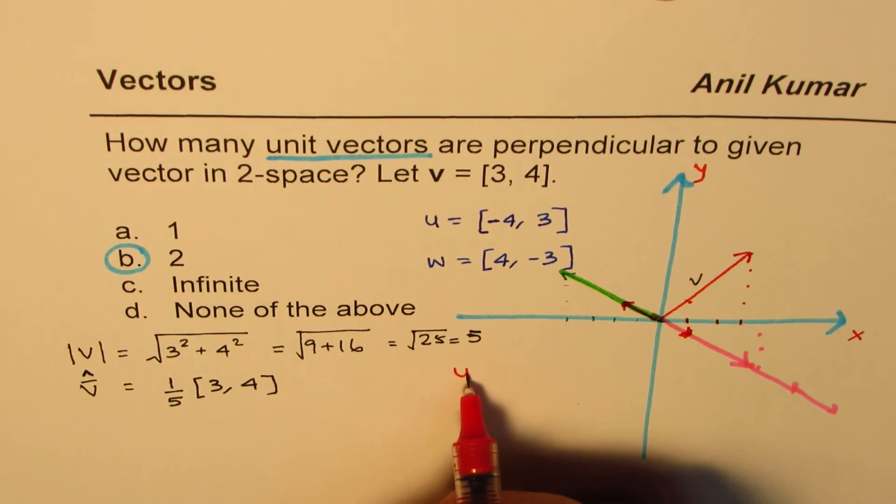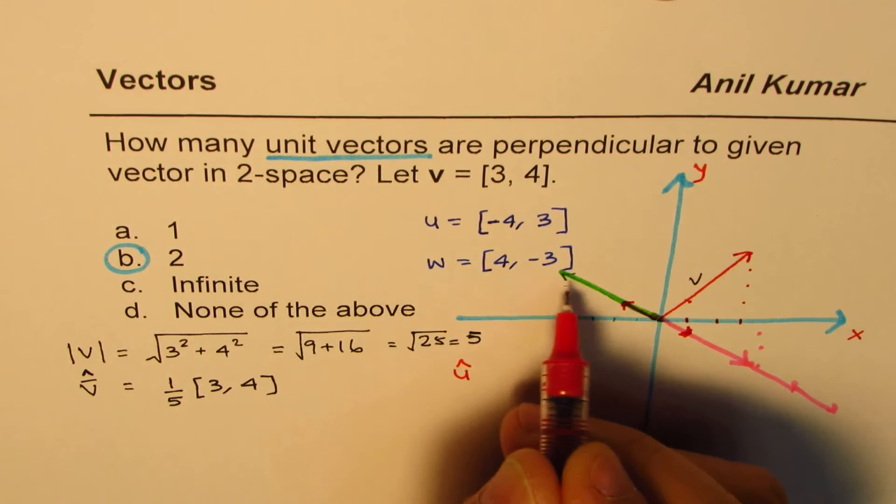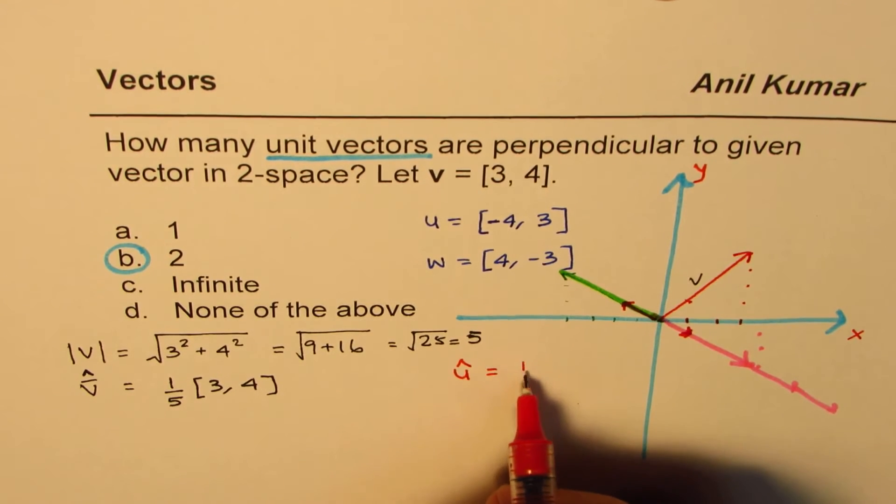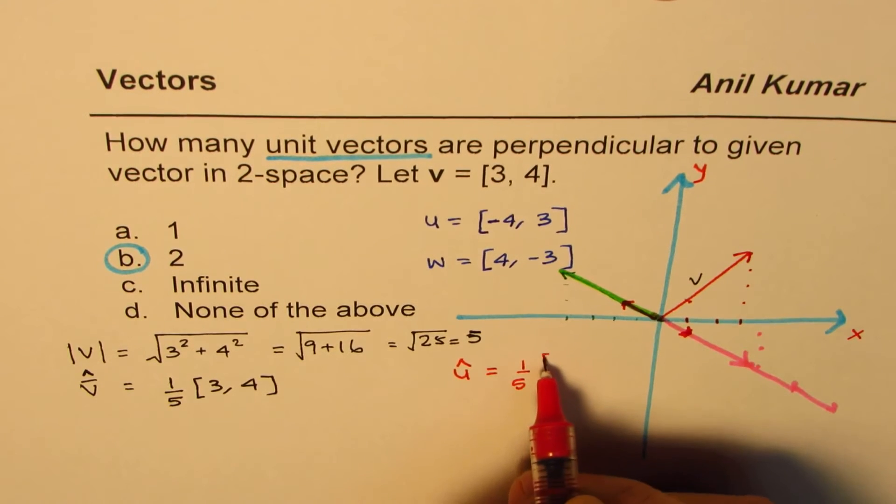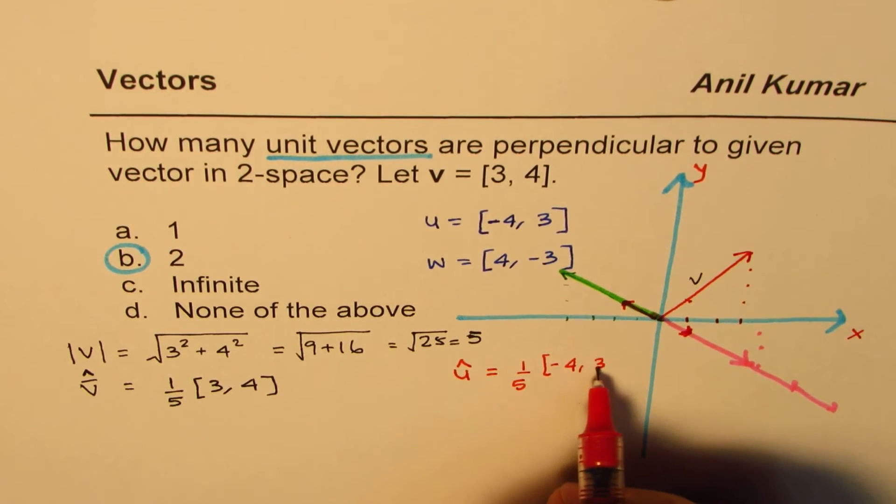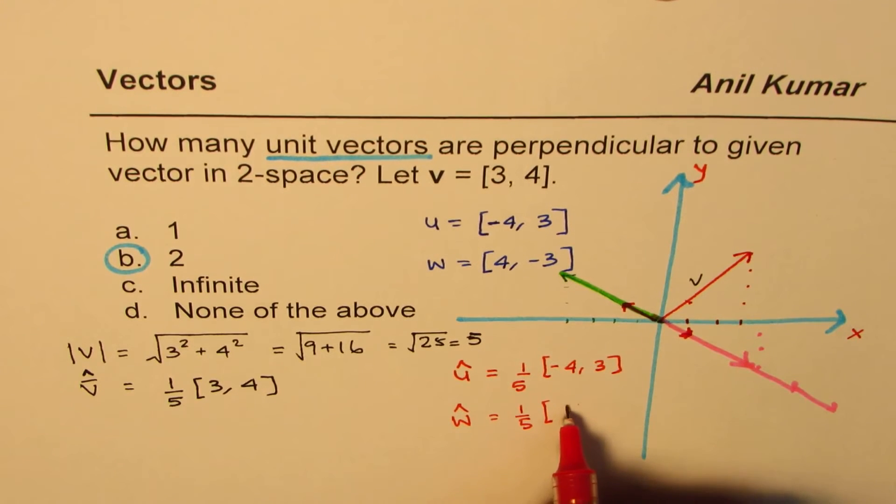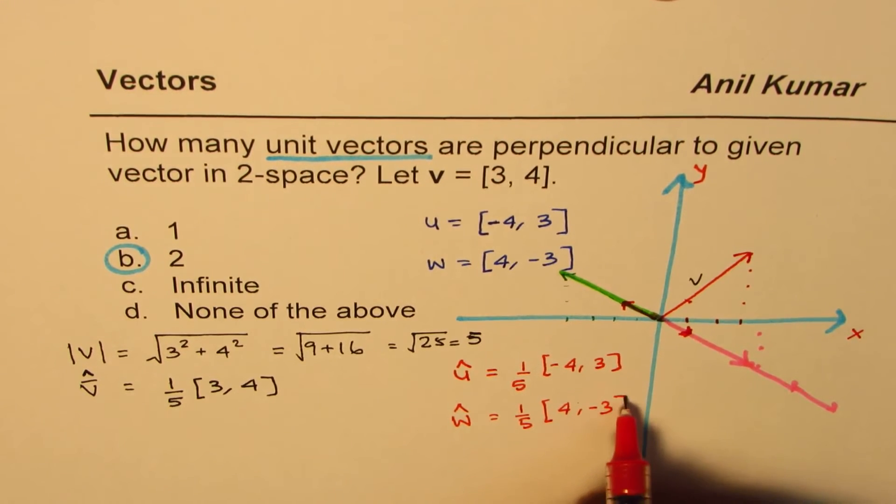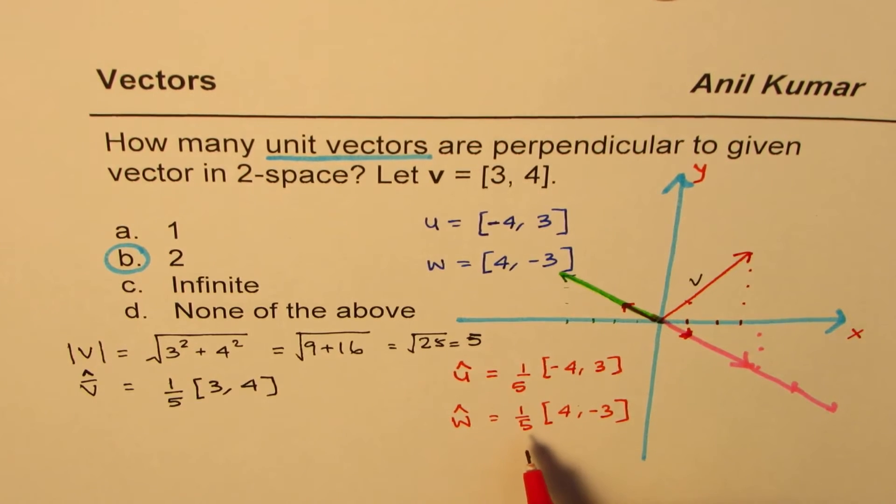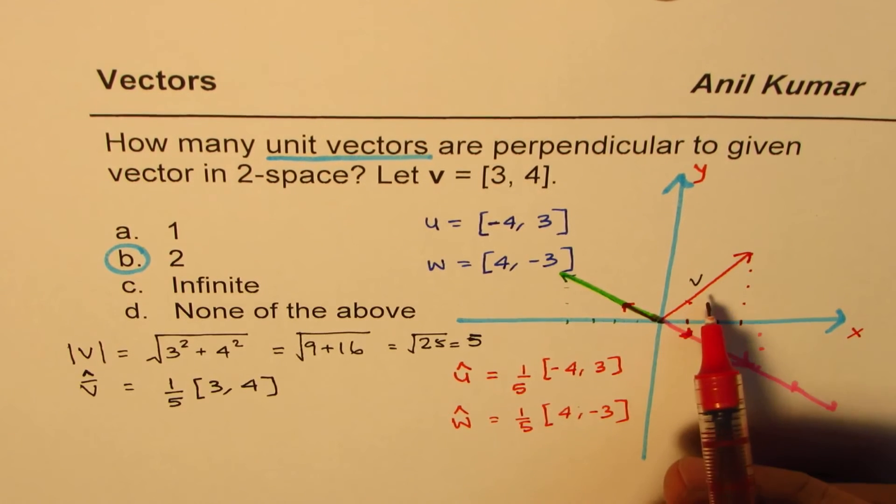The unit vectors could be—let me write down here—unit vector for u will be one-fifth of [-4, 3] or w which will be one-fifth of [4, -3]. These are the two unit vectors which are perpendicular to a given vector.